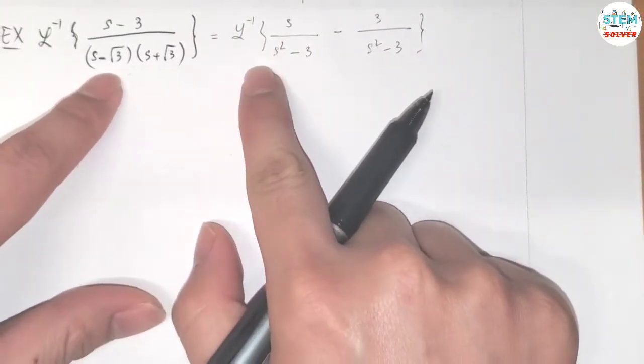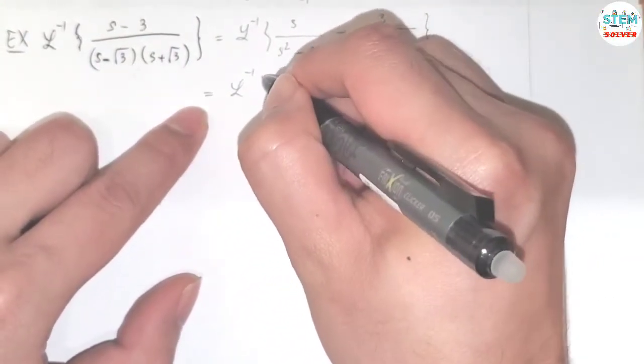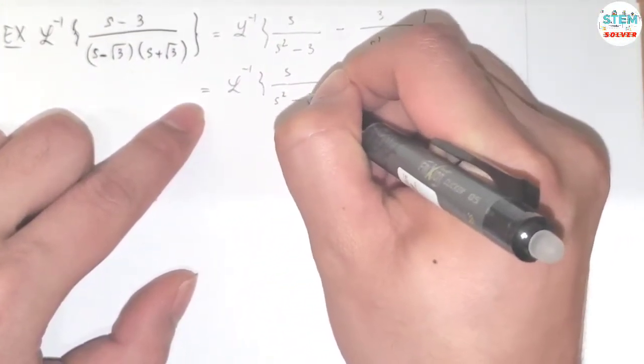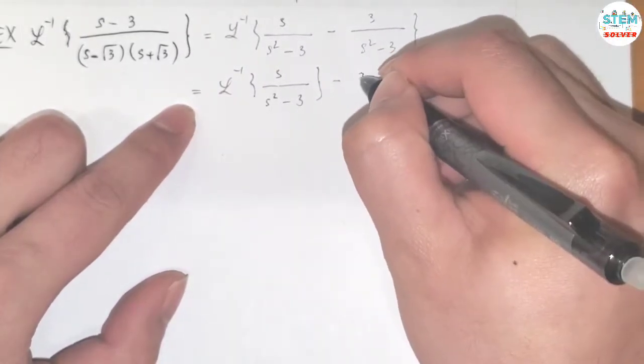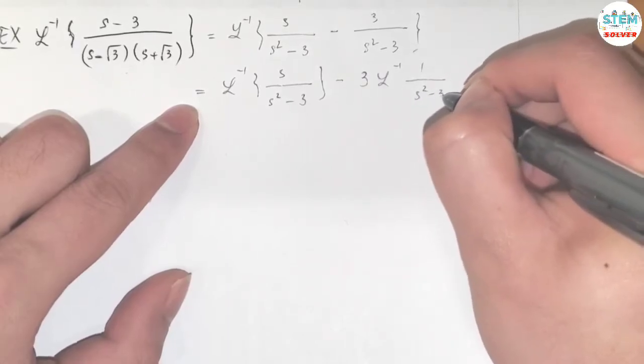Now I'm going to apply the L inverse to every single term here. So I have L inverse of s over s squared minus 3, minus L inverse of 1 over s squared minus 3.